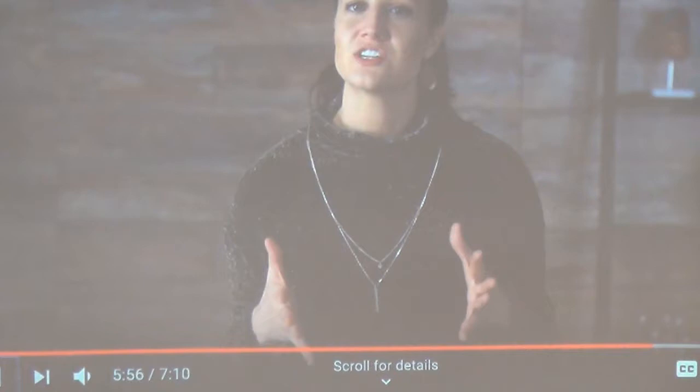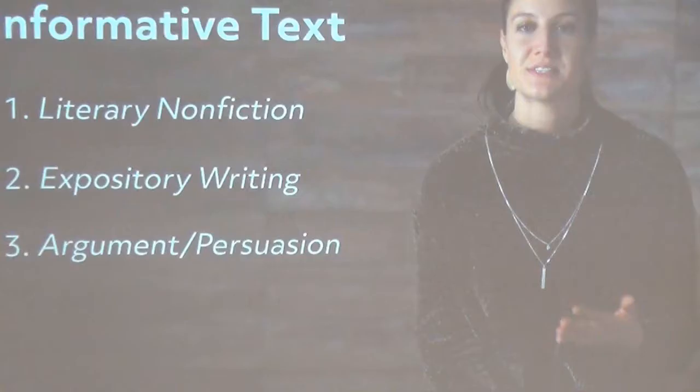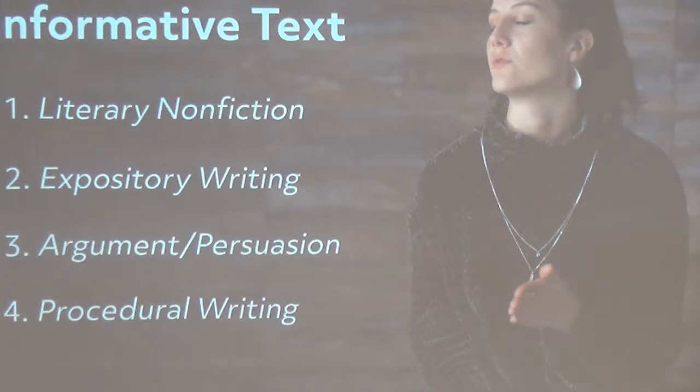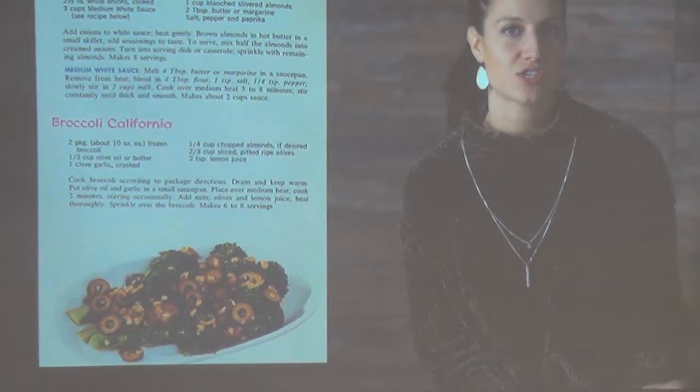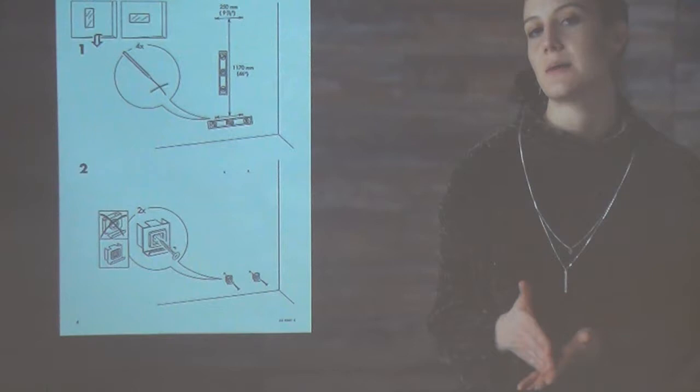The author produces claims, makes arguments, and hopes readers believe them in the end. The last type of informative text is procedural — procedural texts provide a step-by-step guide for a user. A cookbook is a good example, with recipes providing an ingredient-by-ingredient guide to create a specific dish. If you're putting something together, chances are you're reading procedural writing.